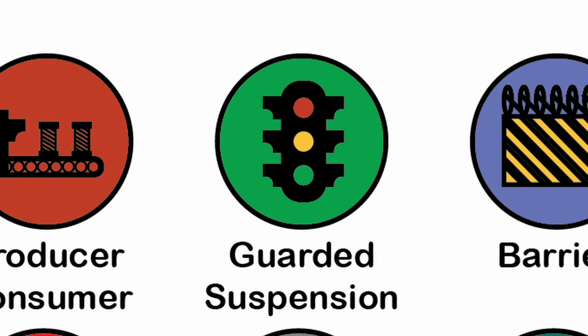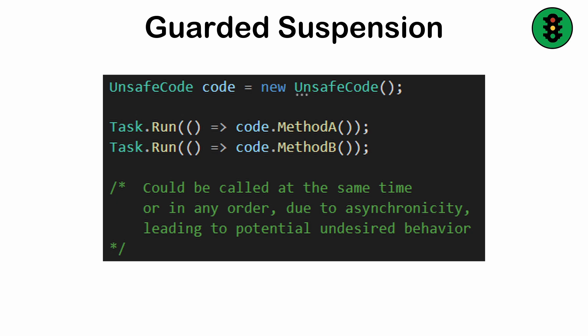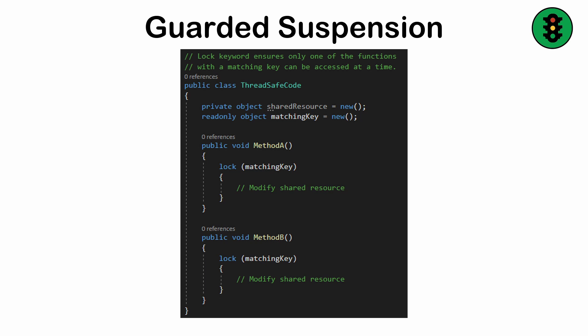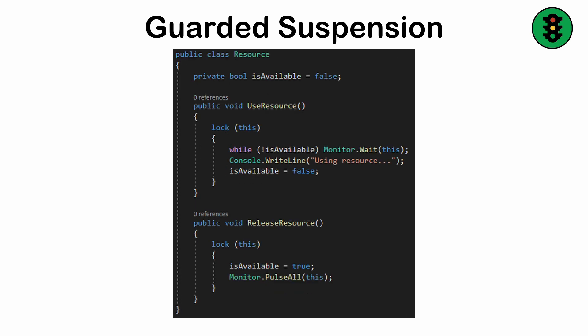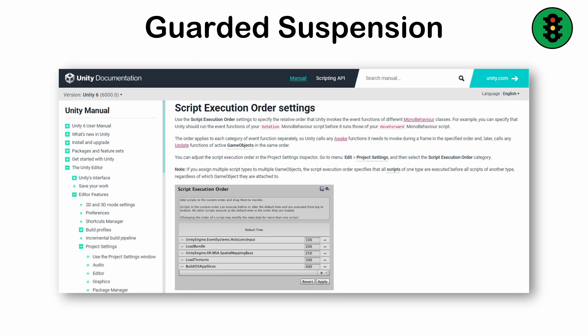Guarded suspension. When multiple threads access shared resources, there is a risk of conflict known as a race condition if proper synchronization is not used. Guarded suspension is the idea that threads only proceed when it's safe to do so. In programming, this reduces wasted computation by suspending threads until conditions are met, like waiting for data to arrive in a queue. Delaying behaviors until a particular point in the life cycle is one means of achieving this.